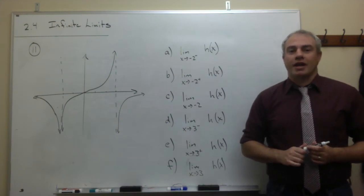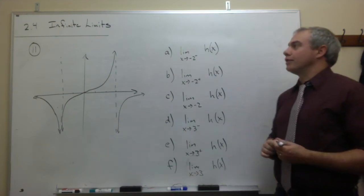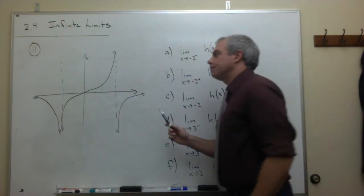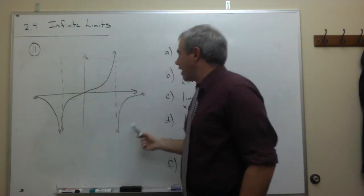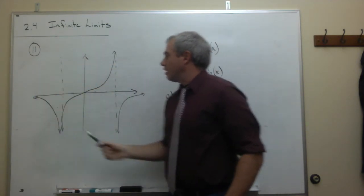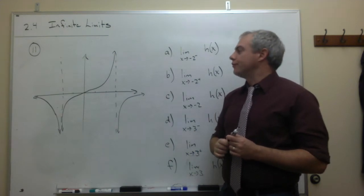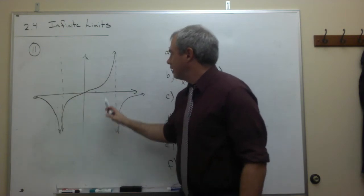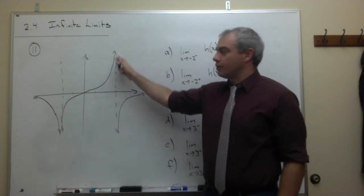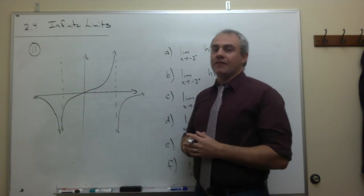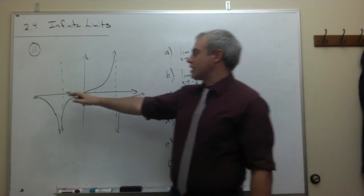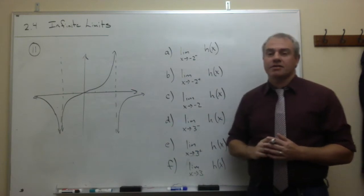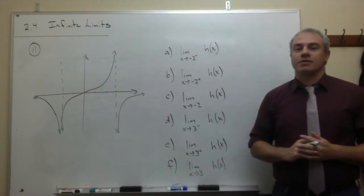In this video, we'll be looking at section 2.4, Infinite Limits, problem number 11. Problem number 11 has to do with this graph that you see here. On this graph, you can see that we have two vertical asymptotes: a vertical asymptote at negative 2 and a vertical asymptote at 3. Given these two vertical asymptotes and the graph, we want to find these six limits. Let's take a look at each one individually.